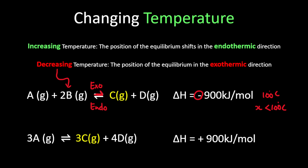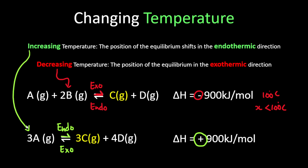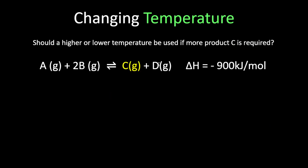So if my reaction is occurring at 100 degrees Celsius, I should reduce it to lower than 100 degrees Celsius. For the second equation, I want more of C. My delta H is positive, so my forward reaction is endothermic and my backward reaction is exothermic. I need more C, so I need the endothermic reaction to happen. I can do that by increasing the temperature. So if I'm using 100 degrees Celsius, my temperature should be higher than 100 degrees Celsius.